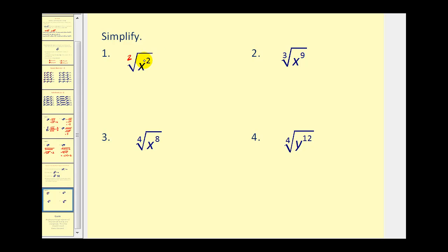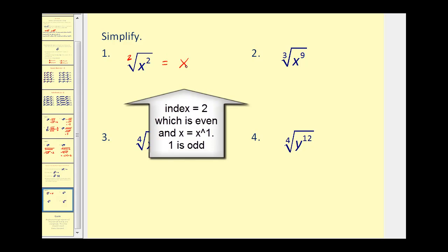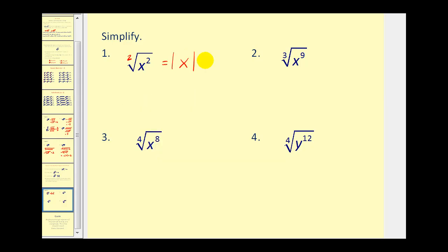If we take the square root of x squared, this has to be a positive value, therefore this will be the absolute value of x, not just x. On number 2, we're looking for 3 equal factors of x to the 9th. Well, x to the 9th is the same as x to the 3rd times x to the 3rd times x to the 3rd. So since this is really x to the 3rd raised to the 3rd power, this simplifies nicely to x cubed. Since the index is odd, there are no special considerations for this nth root.